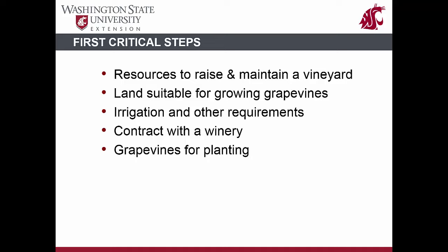Additional steps include establishing trellising and irrigation systems, and developing a long-term contract with a winery to sell grapes every season. The long-term sustainability of a vineyard depends heavily on planting with high quality, healthy grapevines obtained from reliable and trustworthy sources. The quality of the grapevines heavily influences the long-term productivity and profitability of a vineyard.